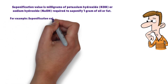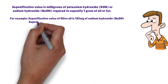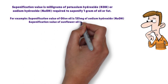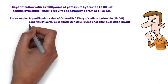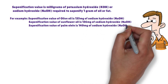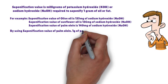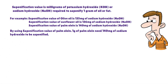For example, the saponification value of olive oil is 135 milligrams of sodium hydroxide. The saponification value of palm oil is 140 milligrams of sodium hydroxide. This means 1 gram of palm oil needs 140 milligrams of sodium hydroxide to be saponified.